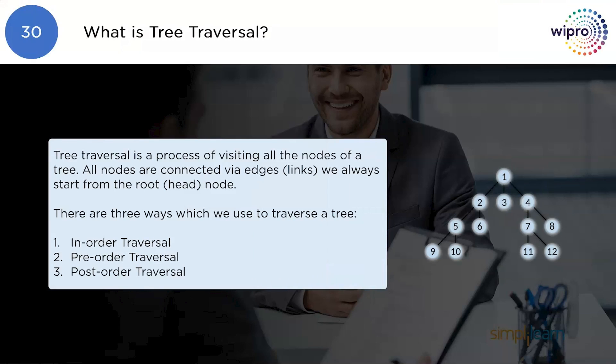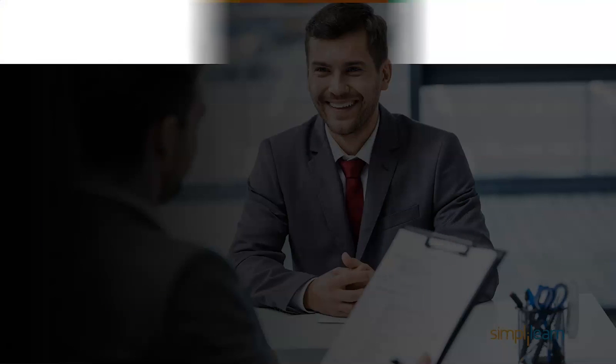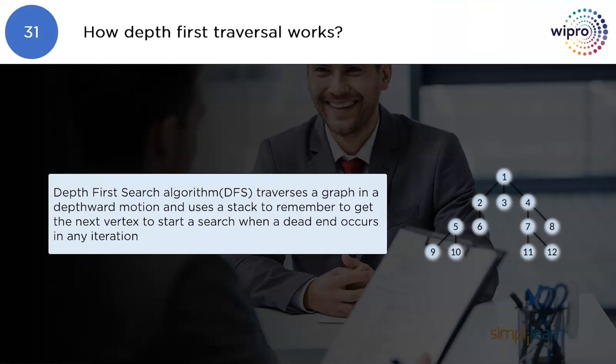What is tree traversal? Tree traversal is a process of visiting all the nodes of a tree. All nodes are connected via edges or links and we always start from the root node. There are three types of tree traversal: in-order traversal, pre-order traversal, and post-order traversal.